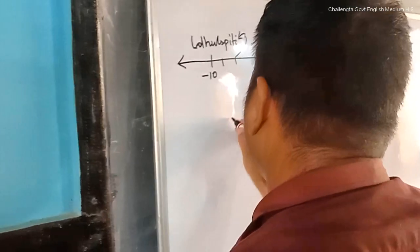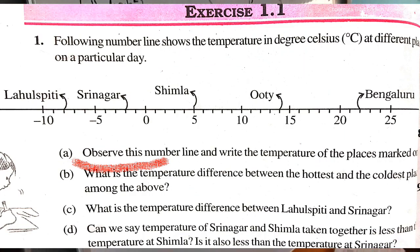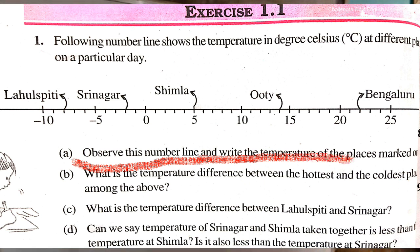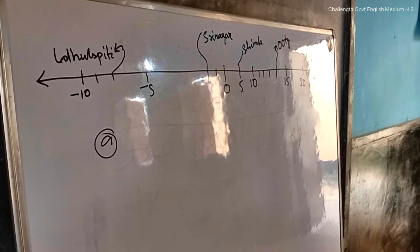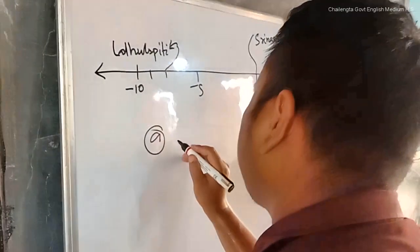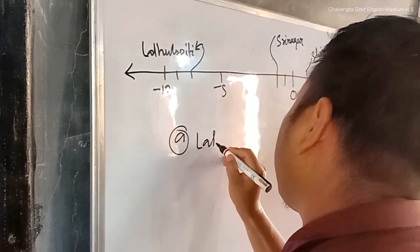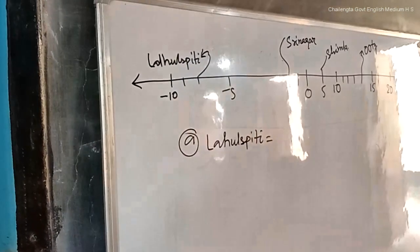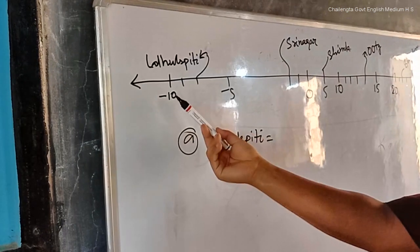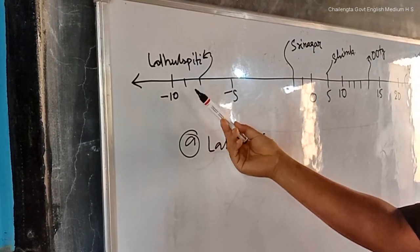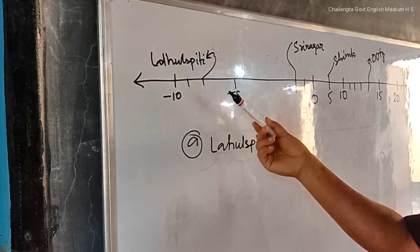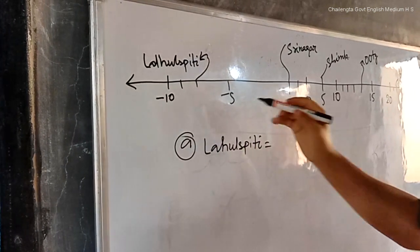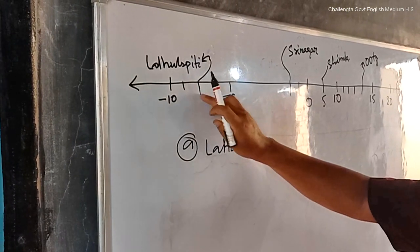Let us see question number A: Observe this number line and write the temperature of the places marked on it. So what is the temperature of Lahul Spiti? We have here minus 10, minus 9, minus 8. So Lahul Spiti is at minus 8.